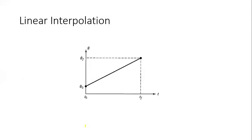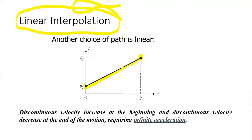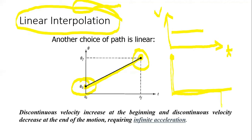Another method of joint space trajectory planning is linear interpolation. The basic idea is to interpolate the initial position and the final position with a straight line, but this trajectory requires infinite acceleration at the beginning and infinite deceleration at the end. To achieve this velocity shape, the acceleration would be infinite, then zero, then negative infinite — which is not possible for any actuator. This limitation makes this approach very difficult without modification.